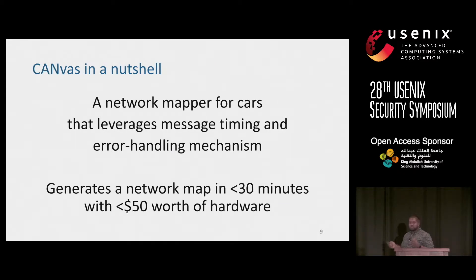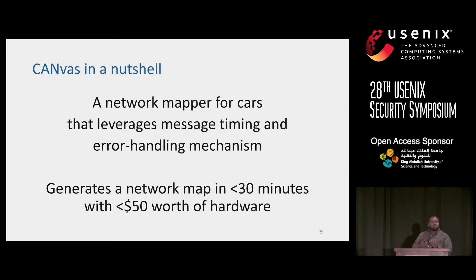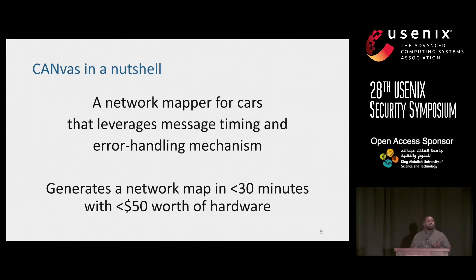In a nutshell, we built CANVAS, a network mapper for cars that leverages information from message timing and the error handling mechanism to generate a network map in under 30 minutes with less than $50 worth of hardware.